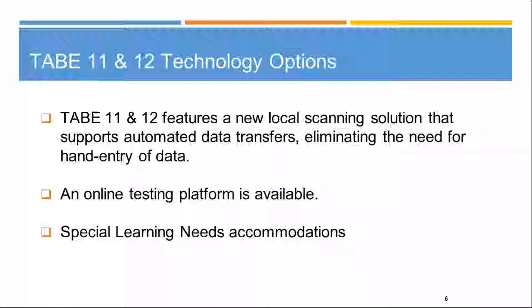TABE 11 and 12 offers new technology options. There is a new local scanning solution, but to use it you need to have TABE score your paper-based test, and your program must have a dual-read, continuous-feed, Twain-compliant scanner — many copy machines have that capacity. The TestMate software is required for that and is available on their website at no cost.